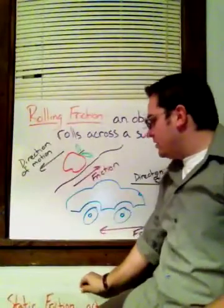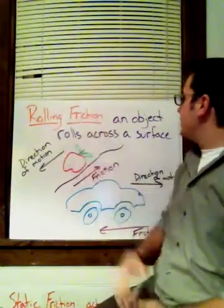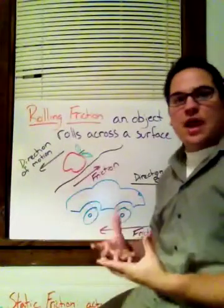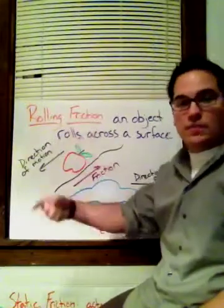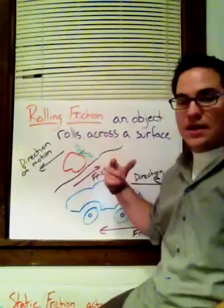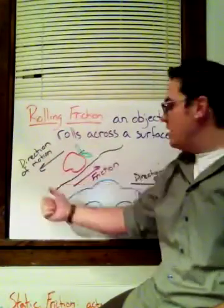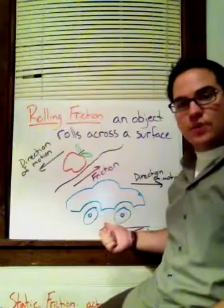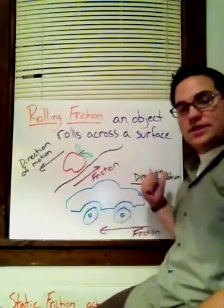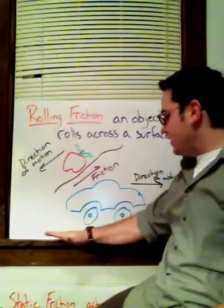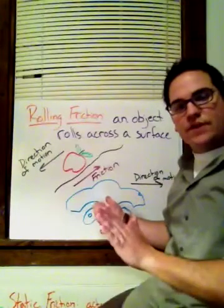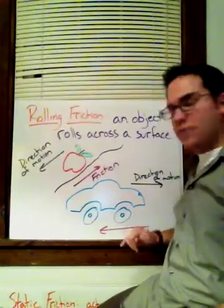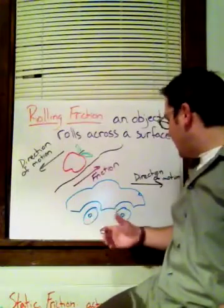The last type of friction is rolling friction, where an object rolls across a surface. The object doesn't have to be round — for instance, an apple rolling down a hill is in a rolling motion. The direction of friction is opposite to the direction of motion. Looking at a car, the direction of the car is forward, but the rolling friction is opposite to it. That's why, if you take your foot off the gas pedal, your car slows down — the friction between the tire and the ground uses up the car's energy.